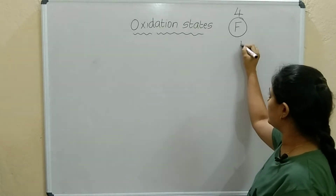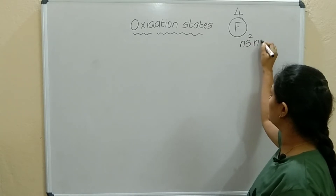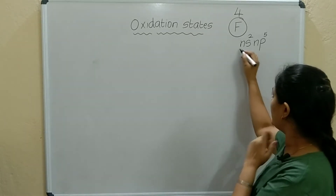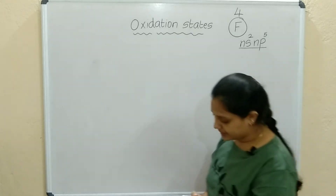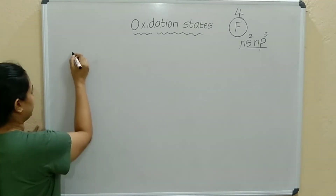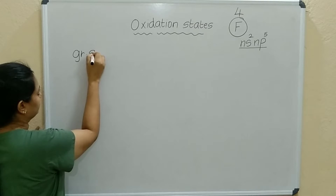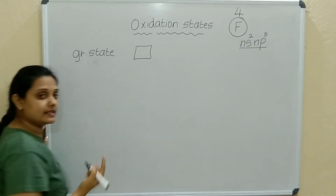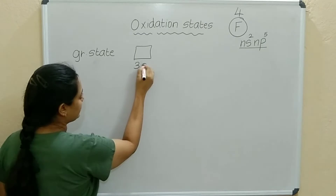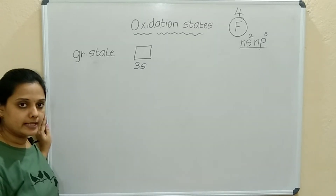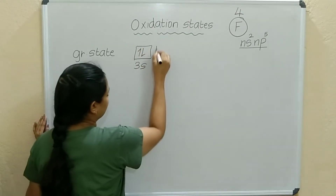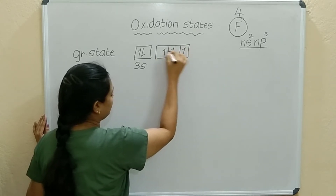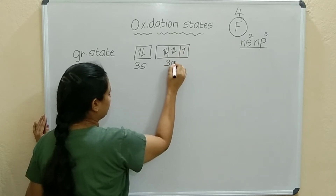The general electronic configuration is NS² NP⁵. Let us check this for Chlorine. In the ground state, we write it as 3S² 3P⁵, with electrons filled as 1, 2, 3, 4, 5 in the 3P orbitals.